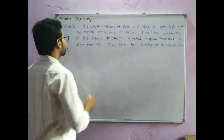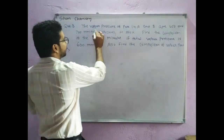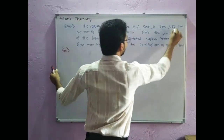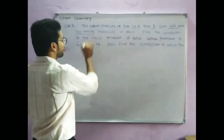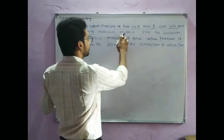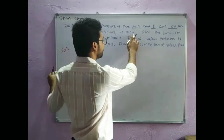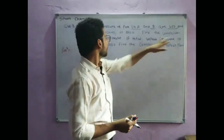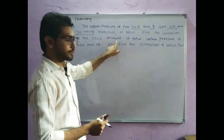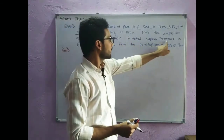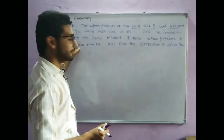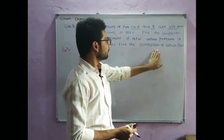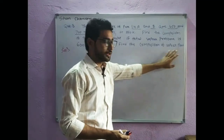Here is the question. The vapor pressure of pure liquid A and B are 450 and 700 mm of Hg respectively at 350 Kelvin. Find the composition of the liquid mixture if the total vapor pressure is 600 mm of Hg, and also find the composition of the vapor phase.